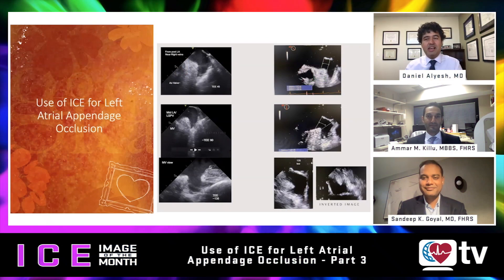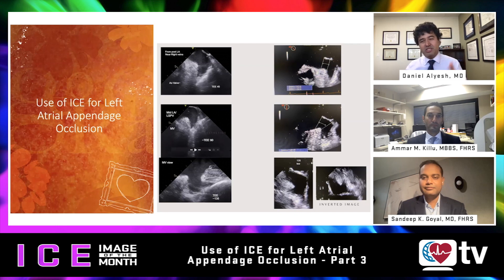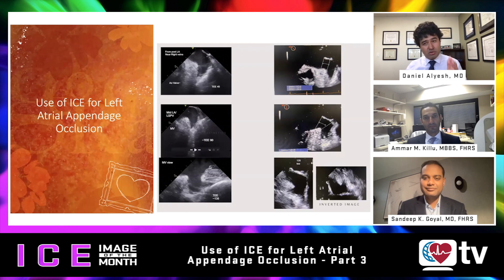This is Heart Rhythm TV and I am Dan Aliesh. Welcome back to the ICE Image of the Month. We are concluding our episode focusing on left atrial appendage occlusion. To summarize: part one covered TEE versus ICE imaging comparisons and core views; part two focused on deployment assessments and special Amulet considerations. For part three, we'll get into troubleshooting as well as future work with 4D ICE.